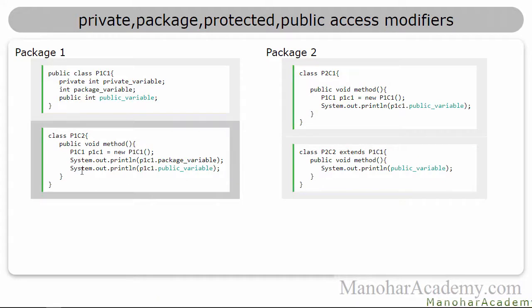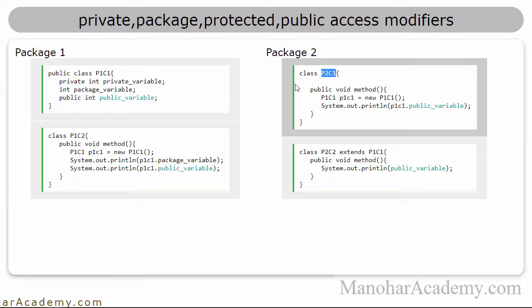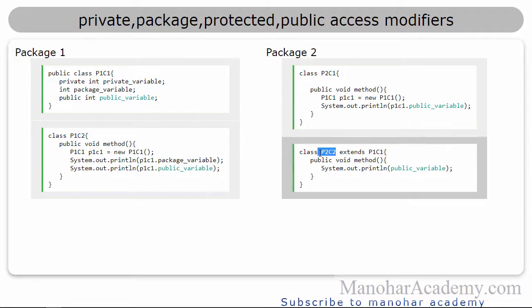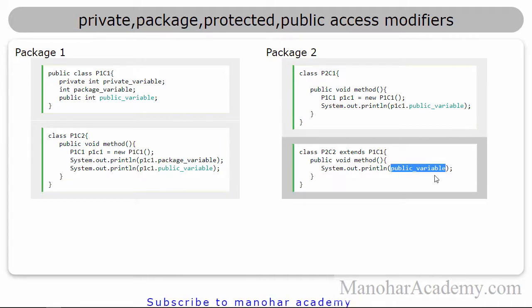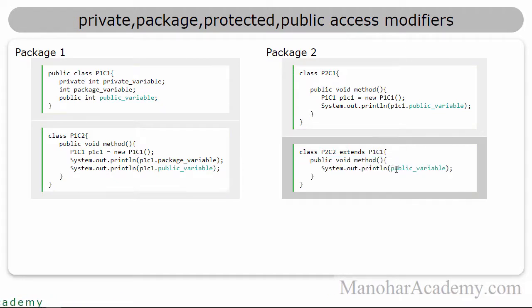Now the public: public is available everywhere. The public variable can be accessed from other classes in the same package as well as other classes in a different package. Note that because P2C1 is not extending P1C1, I am creating a variable of type P1C1 and then printing the public variable. But because P2C2 is extending P1C1, I am able to directly print the public variable. Because P2C2 itself is of type P1C1 — it's a subclass of P1C1 — I can print it without creating any object of P1C1.